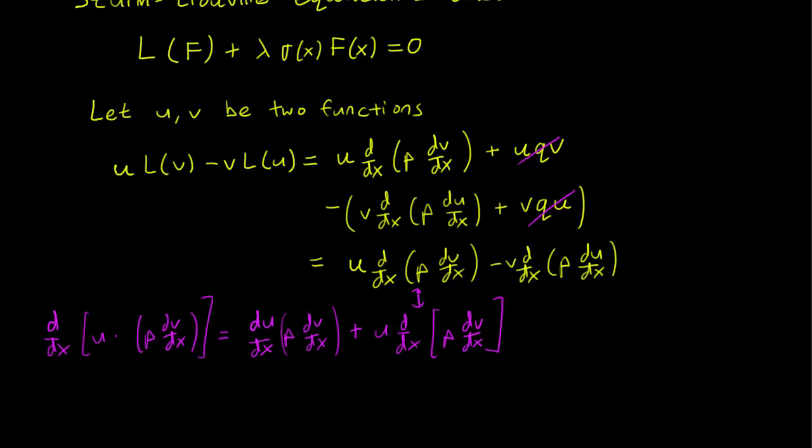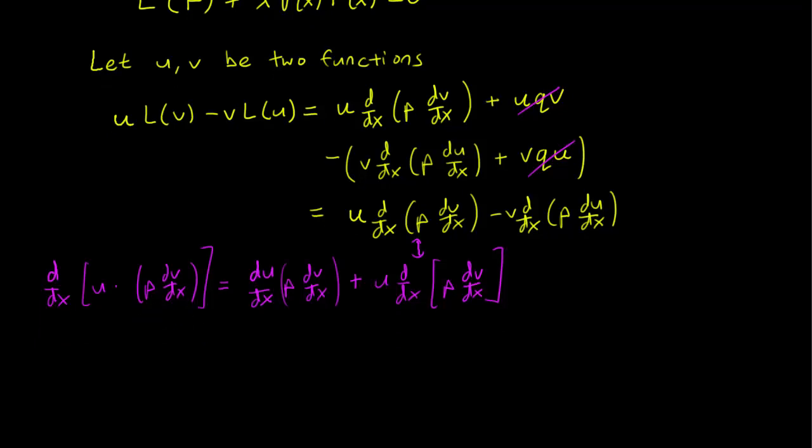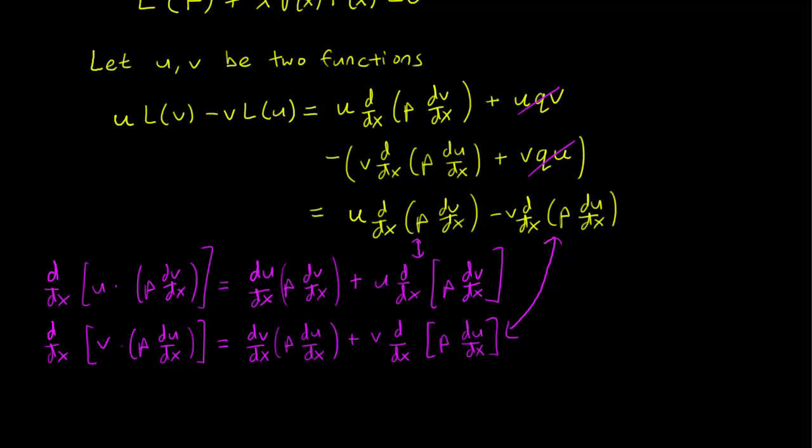We can do the same thing for the other expression, replacing v and u. This gives us a new way to write uL(v) minus vL(u).